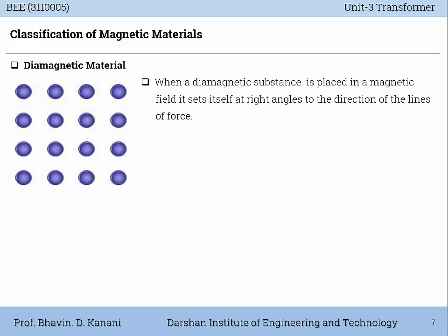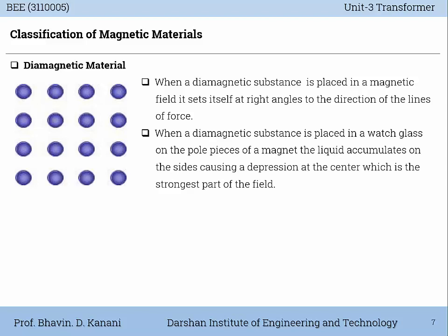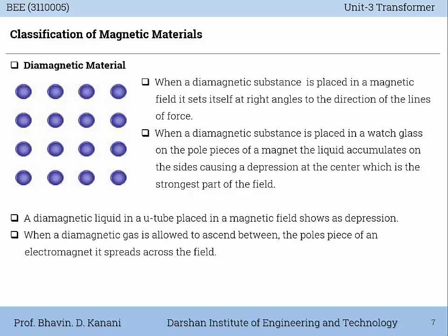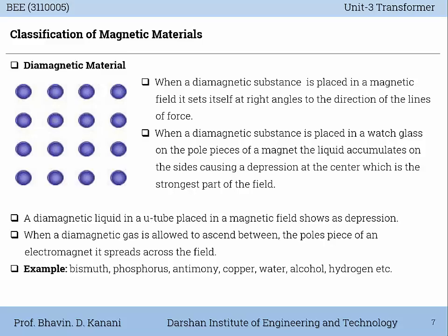Diamagnetic material: When a diamagnetic substance is placed in a magnetic field, it sets itself at right angles to the direction of the lines of force. When a diamagnetic substance is placed in a watch glass on the pole pieces of a magnet, the liquid accumulates on the sides, causing a depression at the center, which is the strongest part of the field. A diamagnetic liquid in a U-tube placed in a magnetic field shows a depression. When a diamagnetic gas is allowed to ascend between the pole pieces of an electromagnet, it spreads across the field. Examples of diamagnetic materials are bismuth, phosphorus, antimony, copper, water, alcohol, and hydrogen.